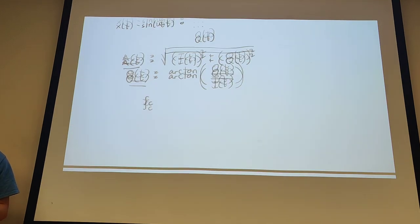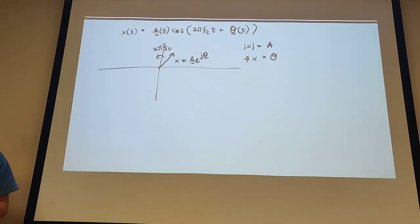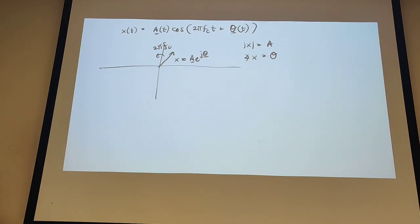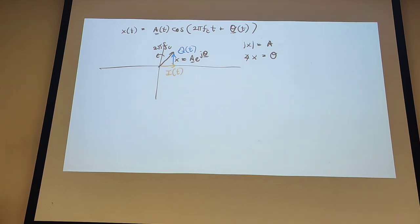One thing I want to clarify: the in-phase component is like the x-component of the wave and the quadrature component is like the y-component — Q(t) and I(t). That's why we have that arctangent relation for the overall phase and the Pythagorean theorem equation for the magnitude of the sinusoid. To get I(t), it's two times the low-pass filter of x(t) multiplied by cos(ω₀t).